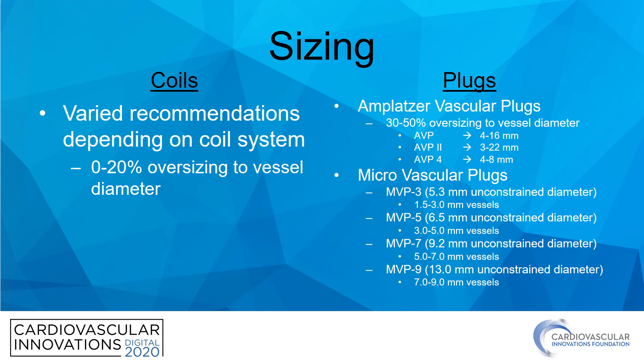For AVPs, the general recommendation is oversizing the device by 30 to 50 percent of the vessel diameter. MVPs are a little different — each of the four available sizes (3, 5, 7, and 9) has a range of vessel diameters recommended for use. Oversizing is always preferred. For example, if you have a vessel that measures 3.0 millimeters in diameter, using an MVP-5 would be preferable.